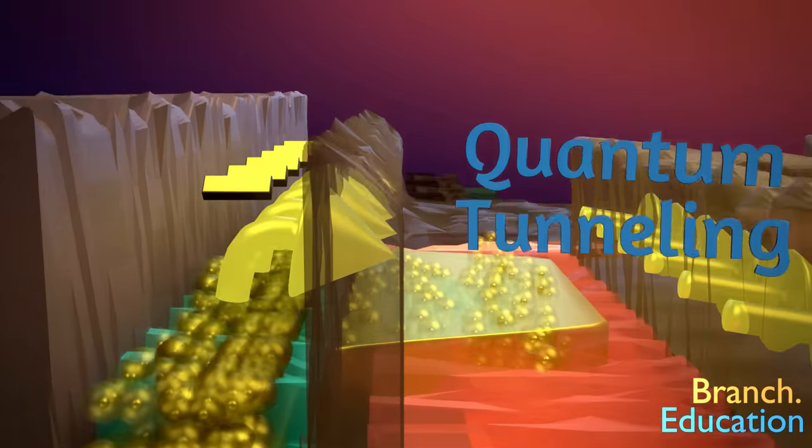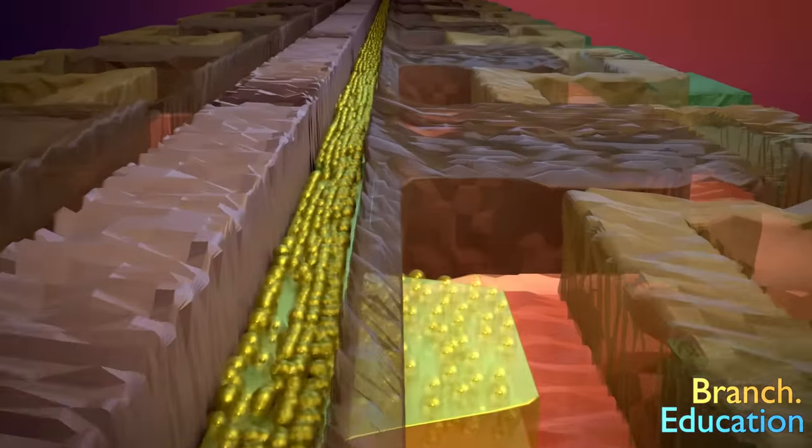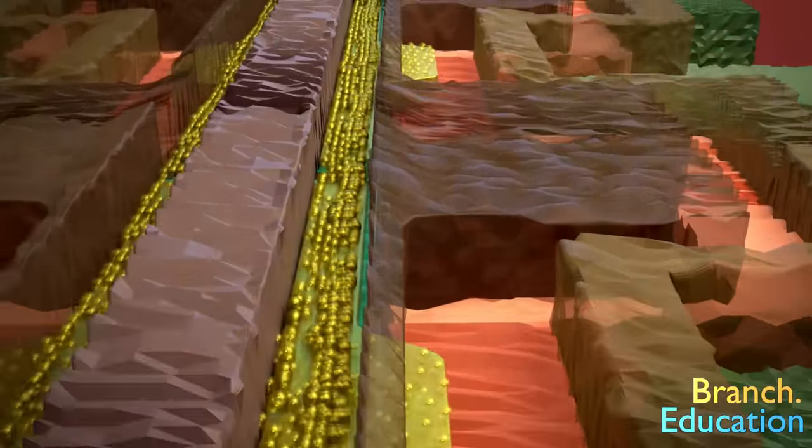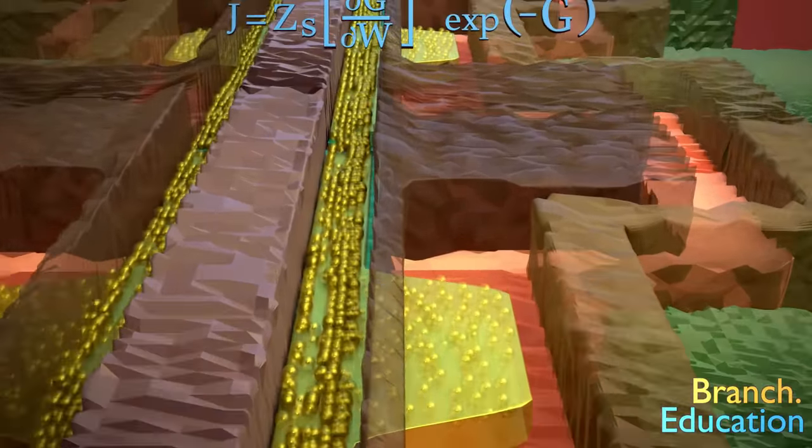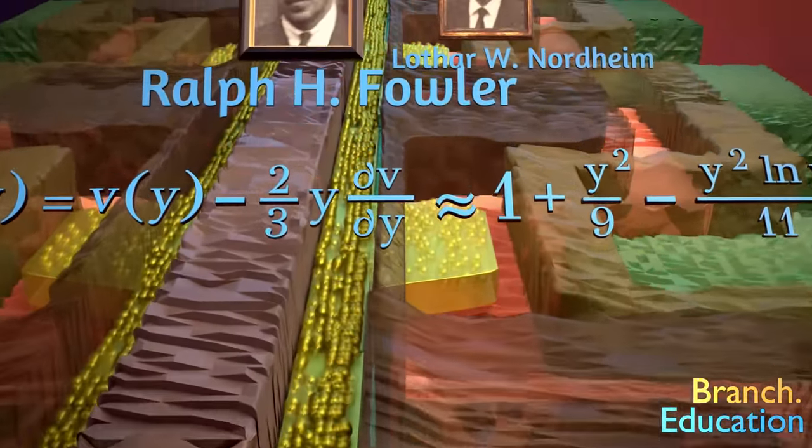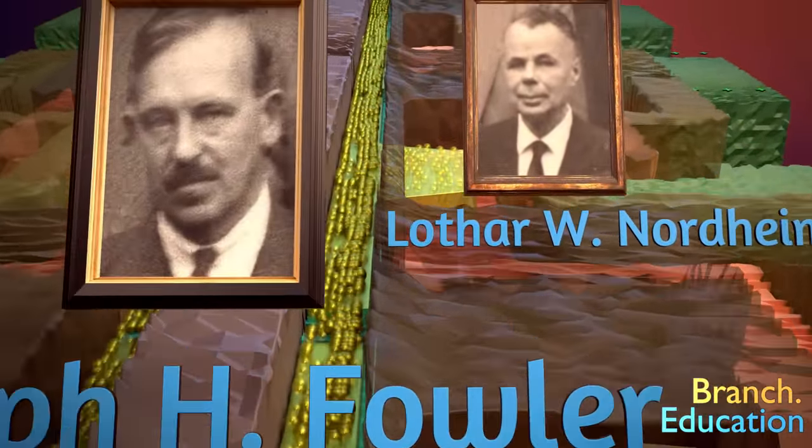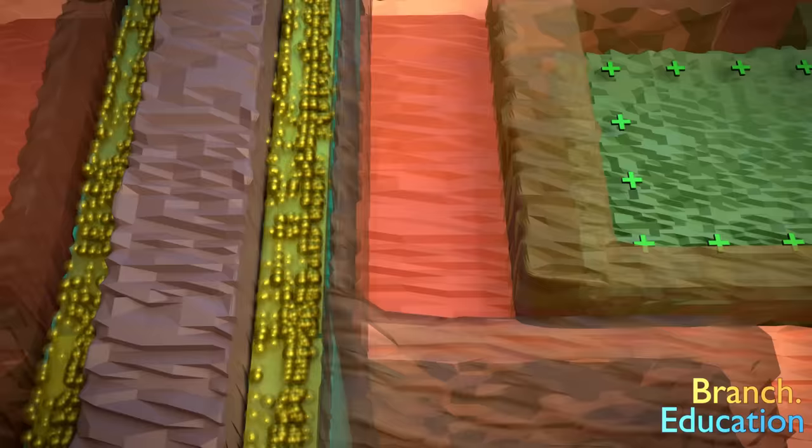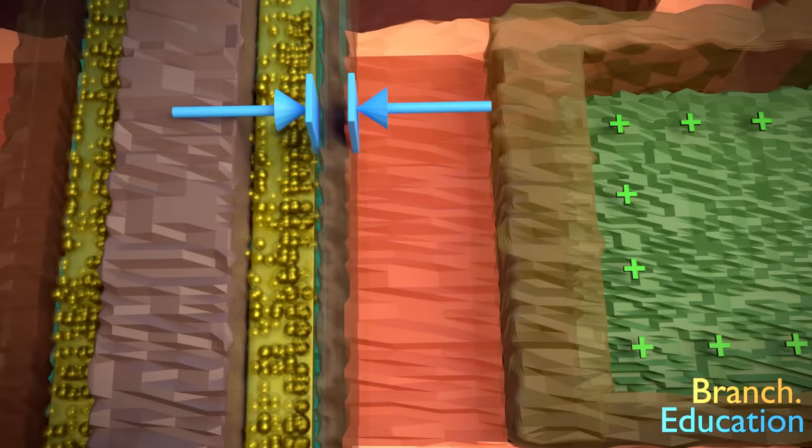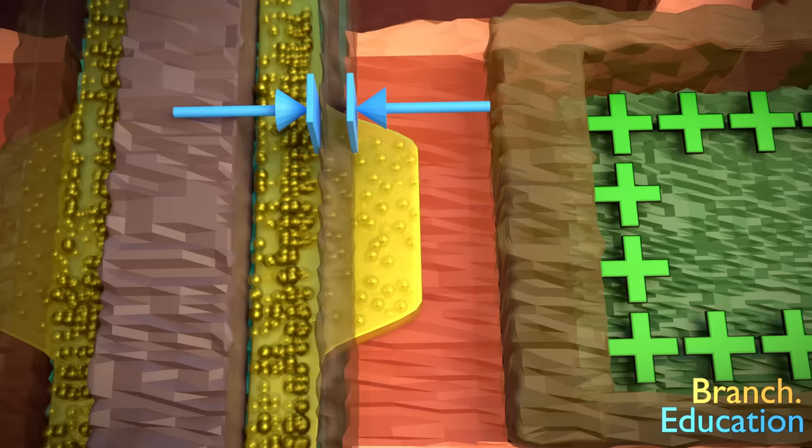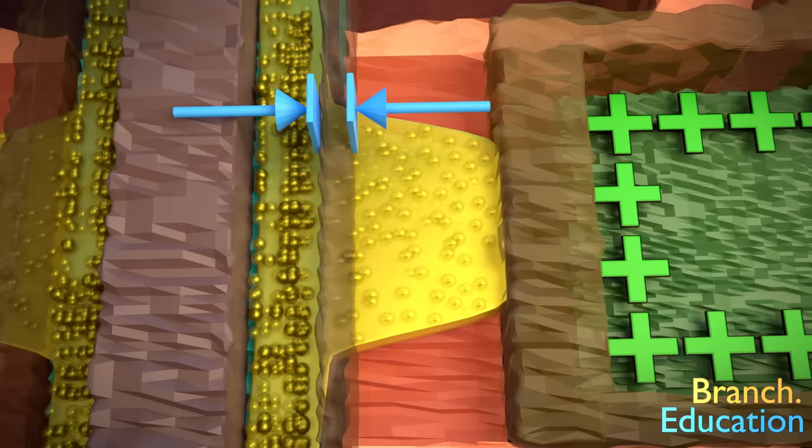And every time you take a picture, your smartphone uses this phenomenon to write information to the charge trap flash memory cells. Scientists and engineers use a set of quantum mechanical equations developed by Ralph Fowler and Lothar Nordheim in the 1920s for figuring out exactly how thin the dielectric barrier should be and how strong the gate voltage should be in order to tunnel electrons from the channel across the dielectric and into the charge trap.